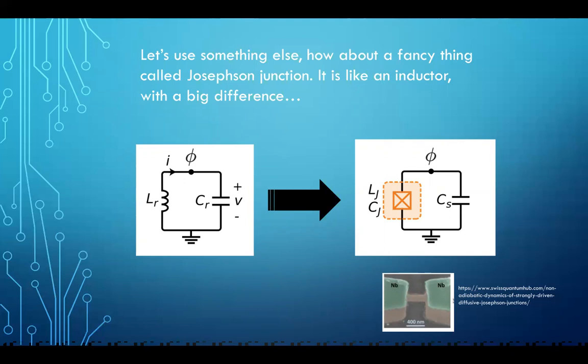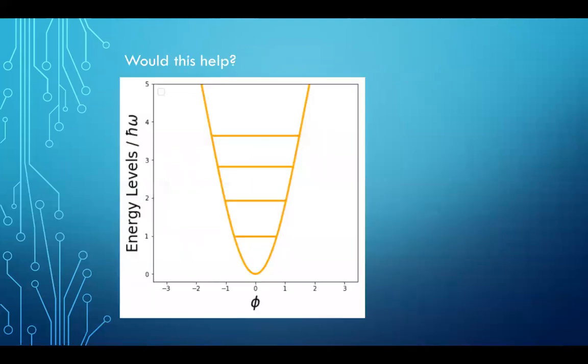And the big difference is the energy diagram for the Josephson junction. It's different from the normal inductor. Well, it doesn't look like much. This is the energy levels for this Josephson junction and capacitor system. And we can see that, well, it does look like the energy levels are not equally spaced now. It's not too obvious, but it is the case. So I use different colors to kind of symbolize the fact that we need different energy to jump to the different levels.